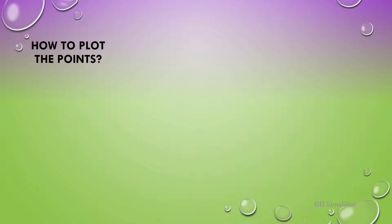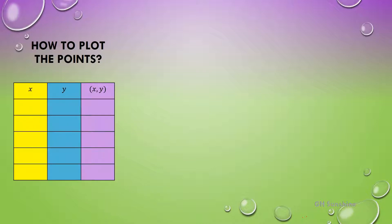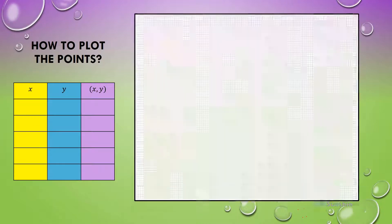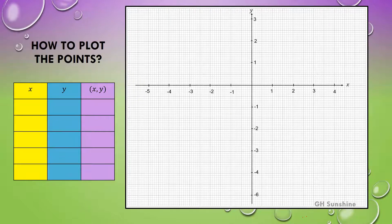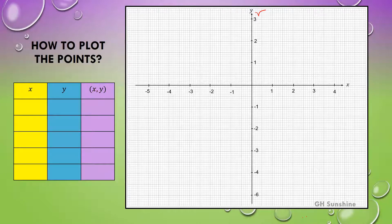We can now proceed to graph linear equations. Let's recall how to plot points using a table of x and y values on graph paper. Draw a vertical line and a horizontal line — the vertical line represents the y-axis, while the horizontal line represents the x-axis.